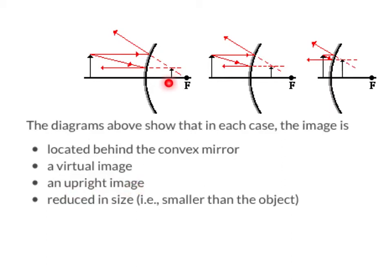It's also upright. These arrows are always facing upward. Instead of the concave mirror like we saw earlier, that would be facing downward. And finally it's also reduced in size. It's smaller than your object. All these arrows are smaller than the original.